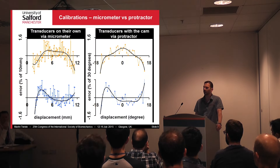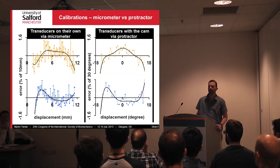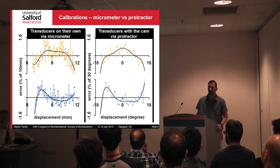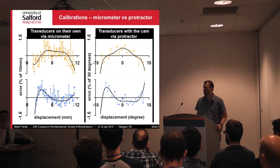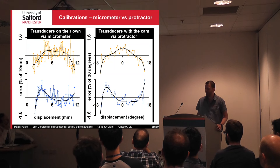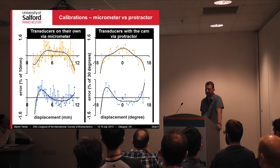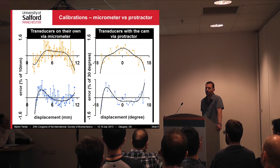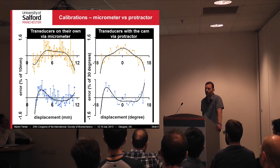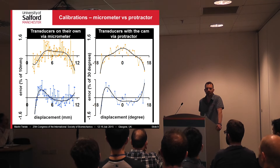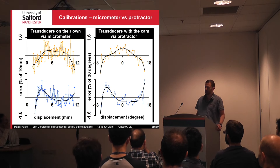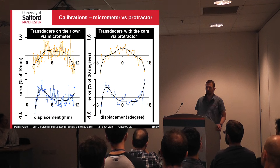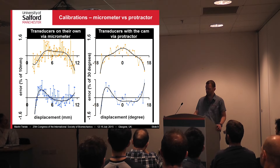Here we can see the comparison between micrometer calibration on the left and protractor calibration on the right. The top row shows transducer one, the bottom row transducer two. We fitted a sixth-order polynomial to the data, represented by the black line. As you can see, the black line on the left for both transducers is very similar to the black line on the right. The error inherent within the transducer itself was repeated within the cam, meaning the cam very accurately captured the motion.